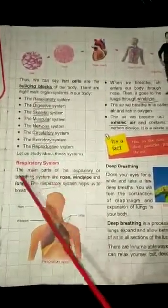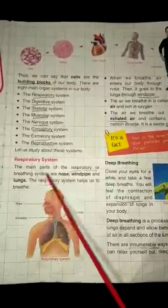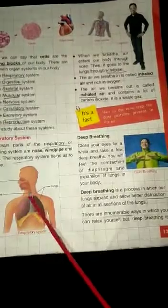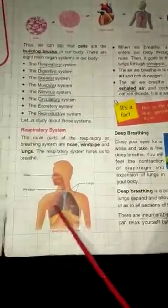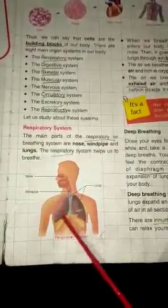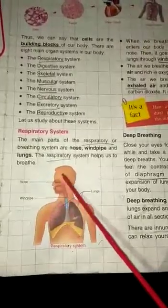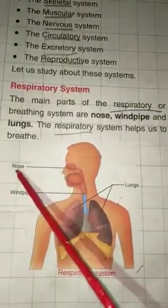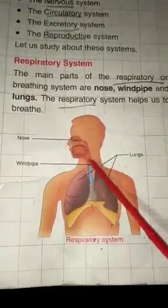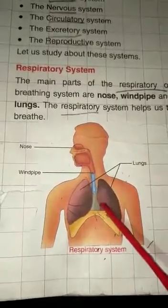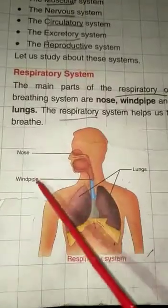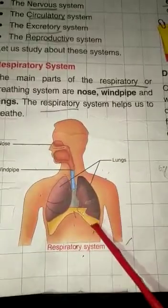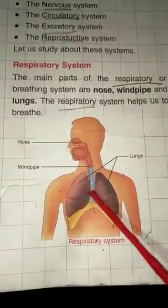In the respiratory system the main parts are the nose, vent pipe, and lungs. We have 2 lungs. When we breathe, air enters through our nose and goes to the lungs through the vent pipe. Inhaled air is oxygen and exhaled air is carbon dioxide.